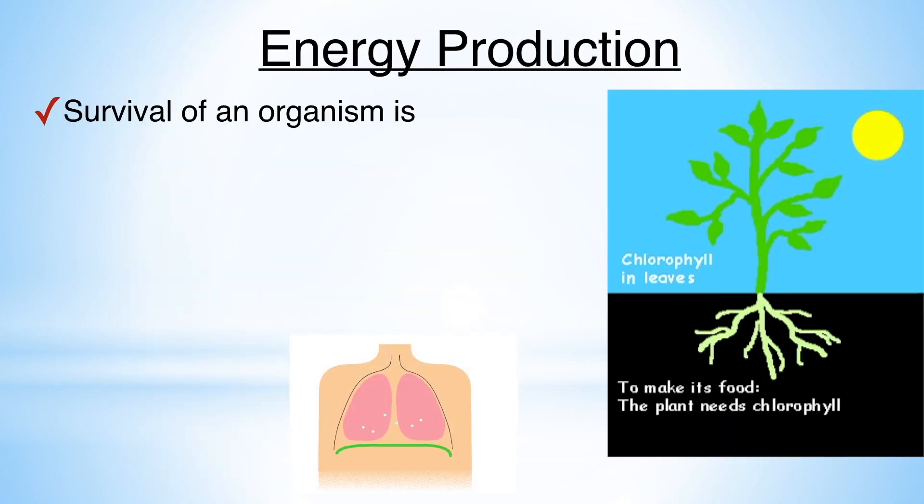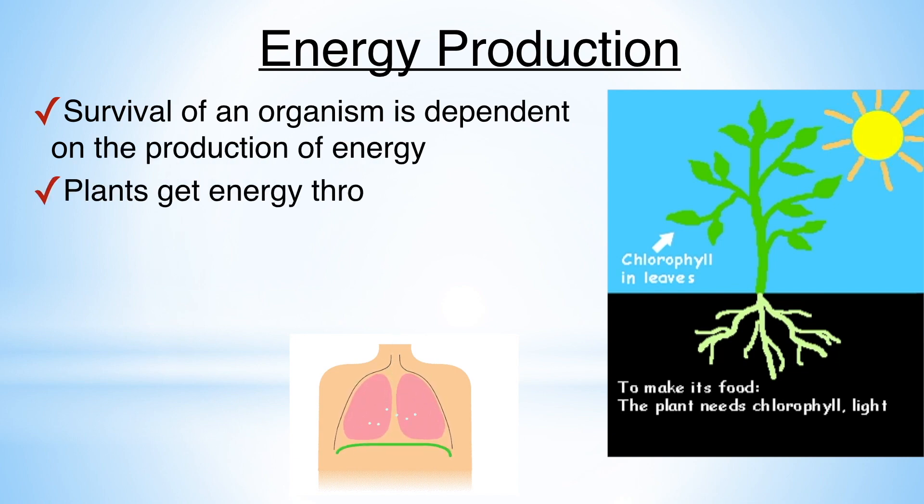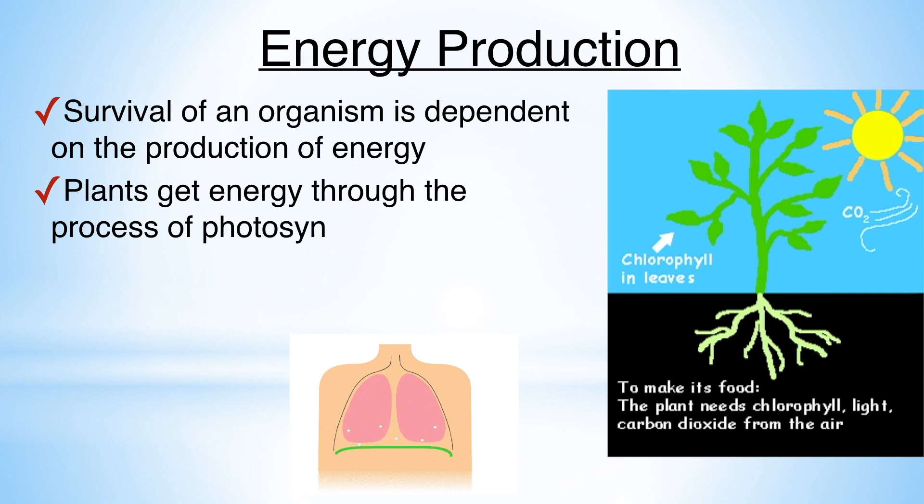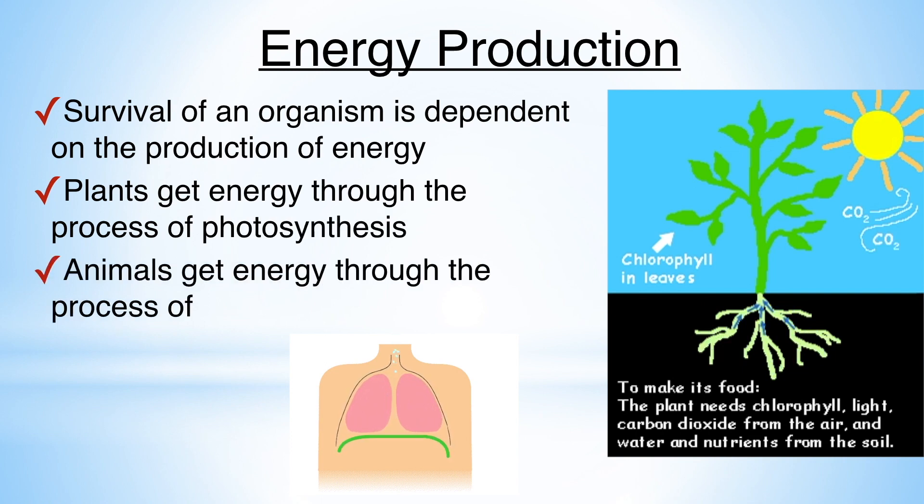Energy production. Survival of an organism is dependent on the production of energy. Plants get energy through the process of photosynthesis and animals get energy through the process of respiration.